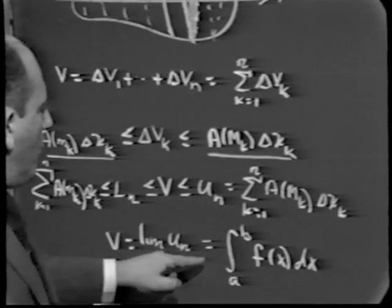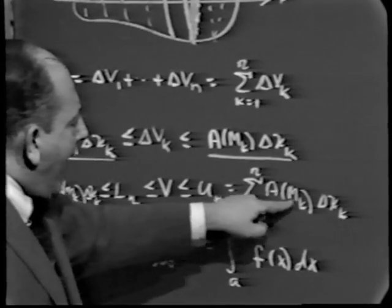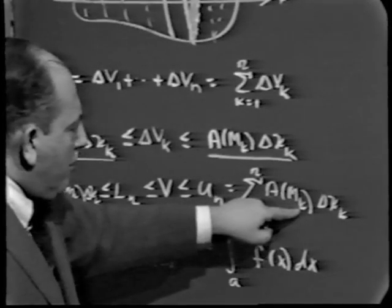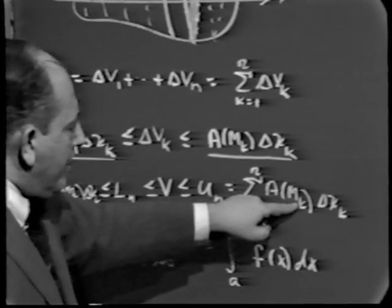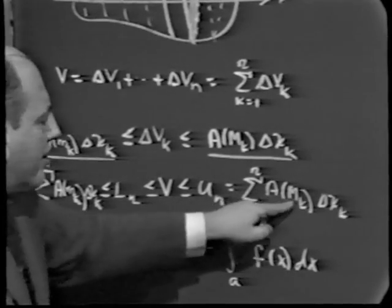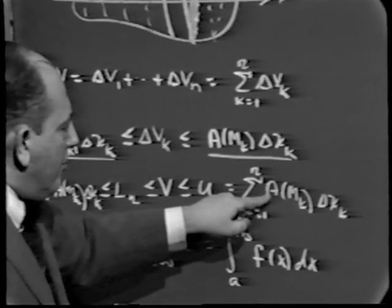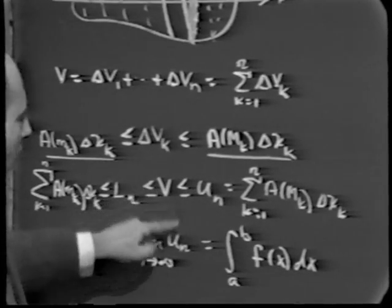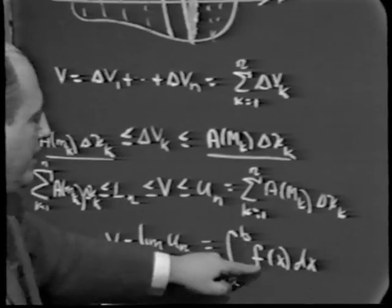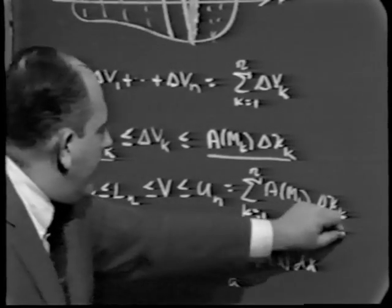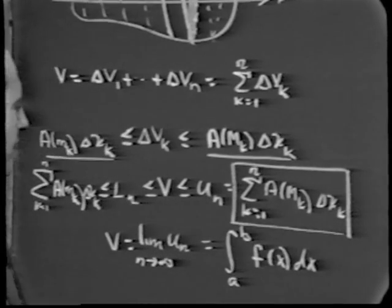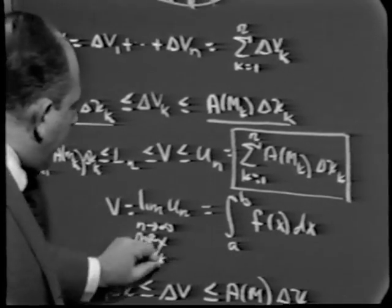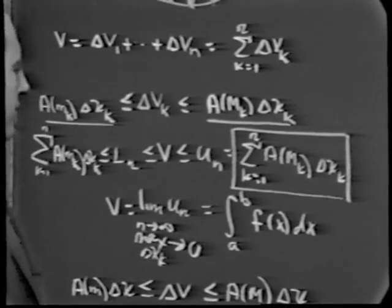By the definition of the definite integral, the volume is just the definite integral from a to b of the cross-sectional area A(x) dx — this sum taken in the limit as the maximum delta x sub k approaches 0. That is the integral calculus approach. For the differential calculus approach, the change in volume delta V is bounded between the maximum cross-sectional area times delta x and the minimum cross-sectional area times delta x.